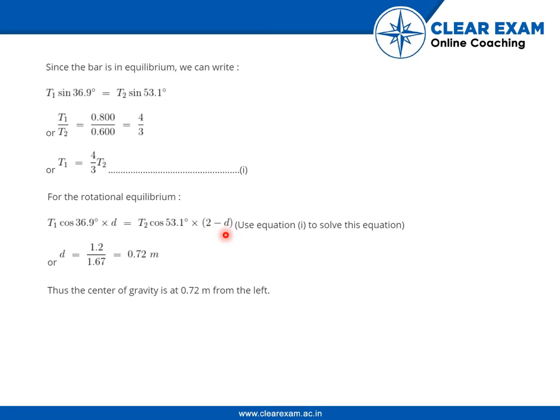So, if we use the value of T1 from equation 1 and putting the value in terms of T1 in terms of T2 here, then we can get the value of d as 1.2 divided by 1.67 which gives us 0.72 meter. Thus, the center of gravity is at 0.72 meter from the left.